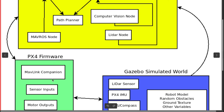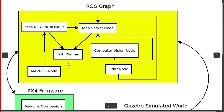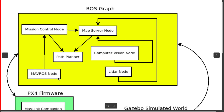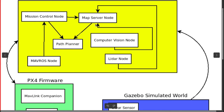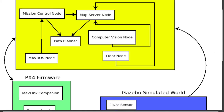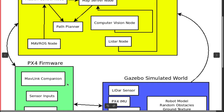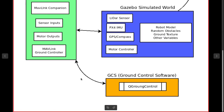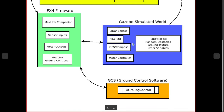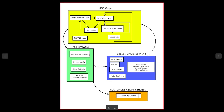The PX4 firmware will publish data through MAVLink companion to ROS, and the data will be fetched by the MAVROS node. The data will then be fed to the mission control node, which publishes data to the map server node and path planner. The path planner will calculate the path for our drone and feed the data back to PX4 firmware, which will send the data back to ground control software through a feedback loop.